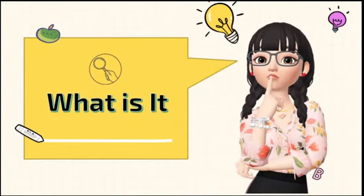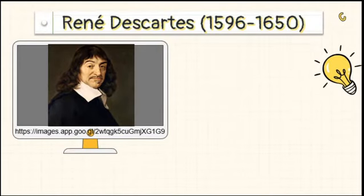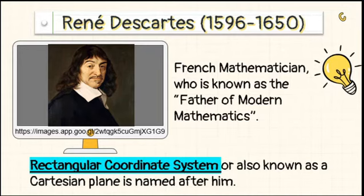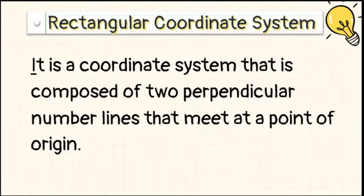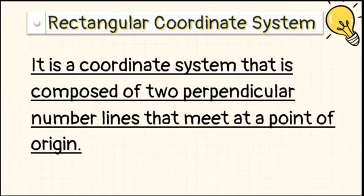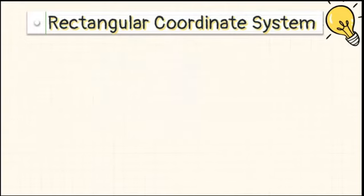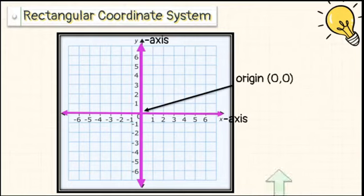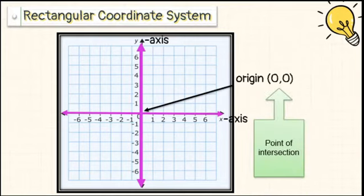Let's now move to What Is It. Do you know who is René Descartes? René Descartes is a French mathematician known as the father of modern mathematics, and the Rectangular Coordinate System is named after him, which is also known as the Cartesian plane. The Rectangular Coordinate System is a coordinate system composed of two perpendicular number lines that meet at a point of origin. The two number lines are the x-axis, which is the horizontal number line, and the y-axis, which is the vertical number line. Their point of intersection is called the origin.